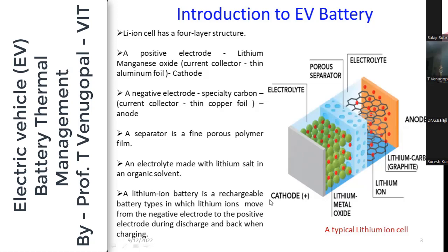Lithium-ion batteries are rechargeable and have very high energy density. During the discharge cycle, lithium ions move from the anode to the cathode through the electrolyte, while electrons flow through the external circuit where the electric motor is connected. During charging, the reverse happens. Graphite is used as the anode because it can absorb a large quantity of lithium ions.